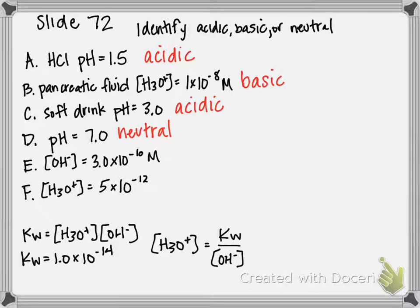And then E is where it gets a little tricky. We're not given a hydronium concentration or a pH. We're given hydroxide concentration. So what we're going to have to do, if we go down here to the bottom of the slide, is use our Kw equals hydronium concentration times hydroxide concentration to actually solve for our hydronium concentration, which we can then identify as acidic, basic, or neutral.